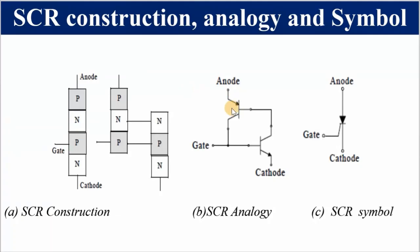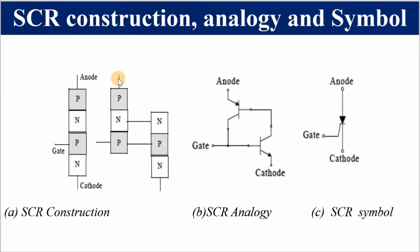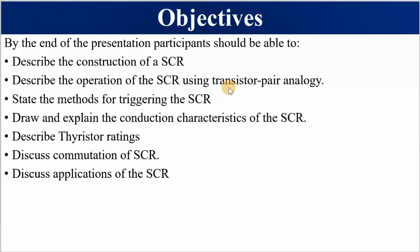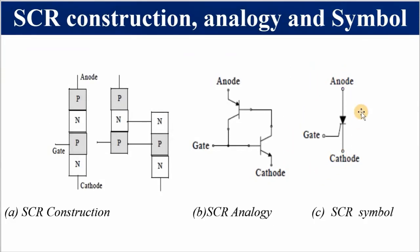This is our PNP transistor with the emitter, gate, and collector. The collector is connected to the base of the NPN transistor. The gate is connected to the collector of the PNP as well as to the base of the NPN. So we have our anode, our cathode, and our gate. This is the Silicon Controlled Rectifier transistor analogy. This is the schematic symbol — the anode, cathode, and gate.